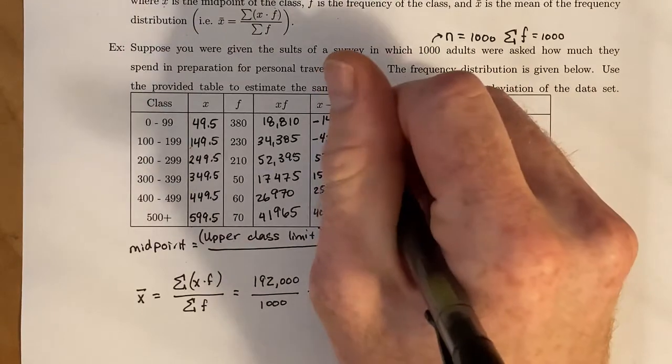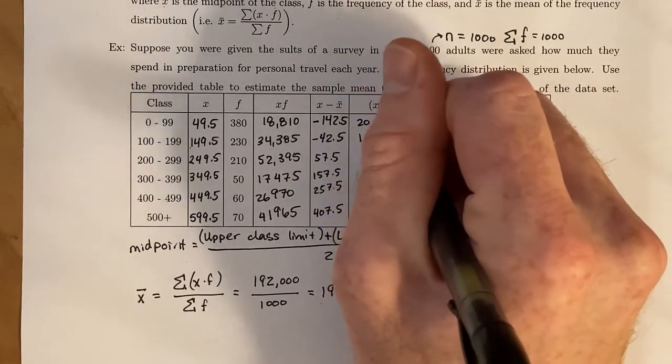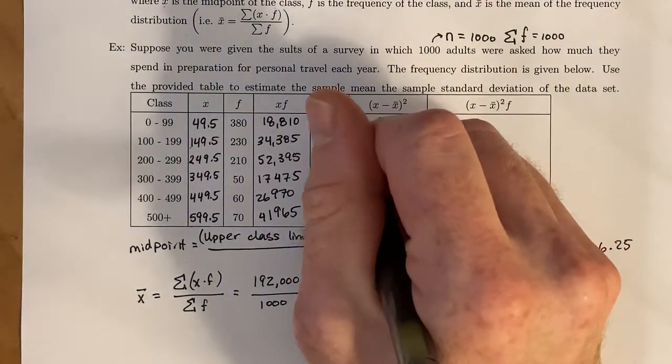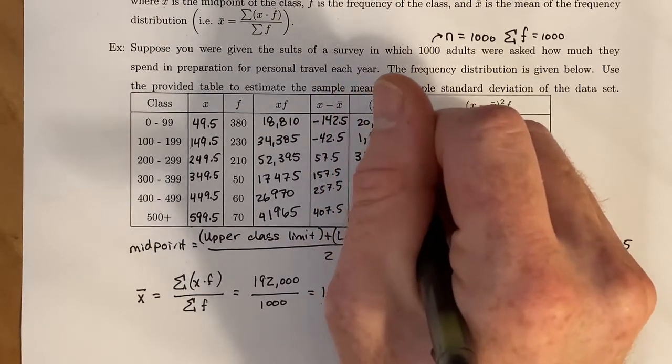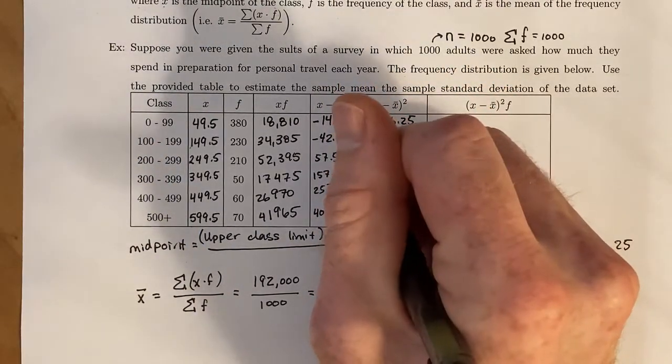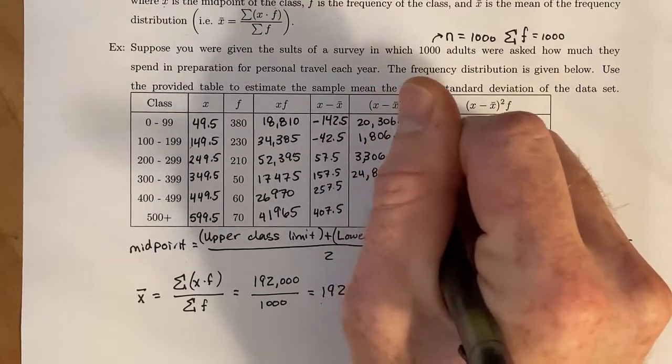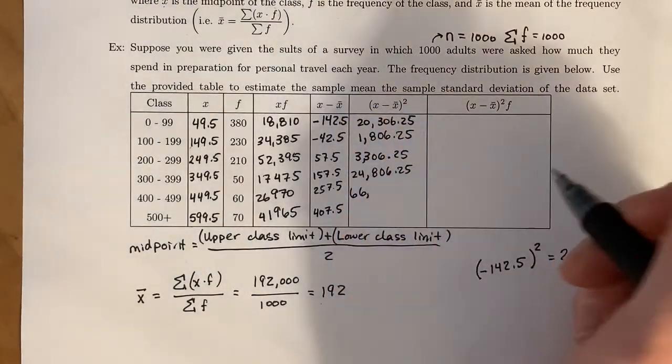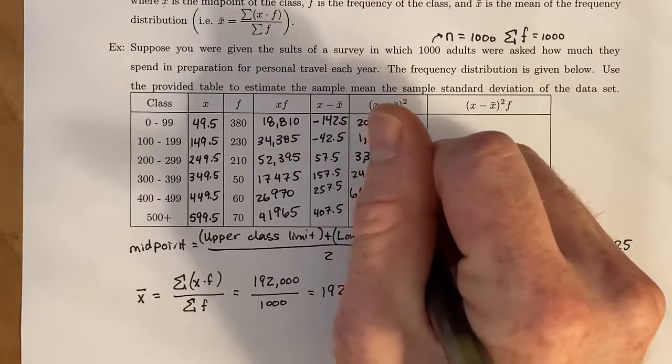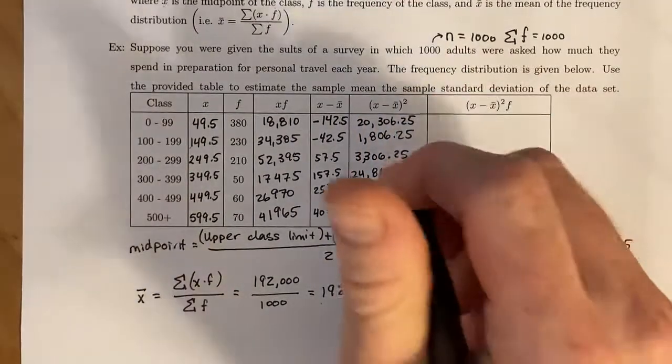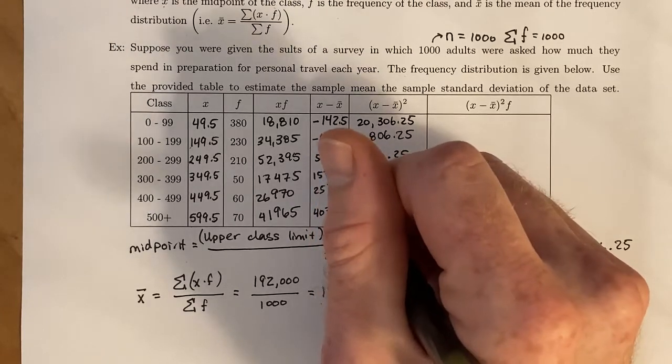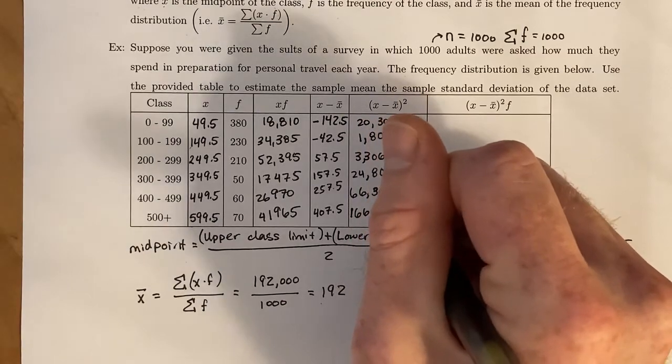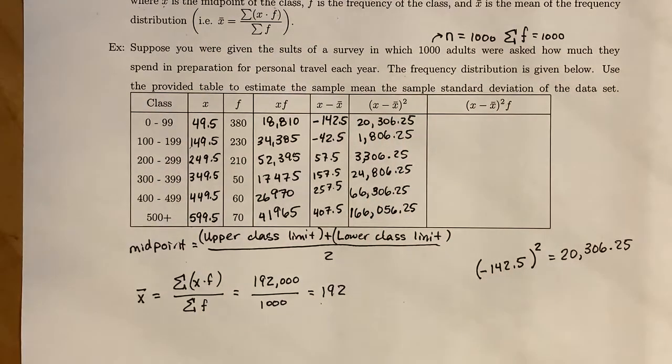We just do that for each value. So we get 1,806.25. Next one is 3,306.25. Next is 24,806.25. Next is 66,306.25. And lastly, it's going to be 166,056.25. Those numbers get large really quick.